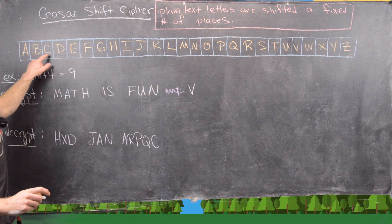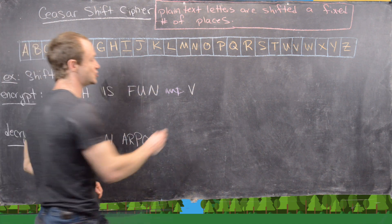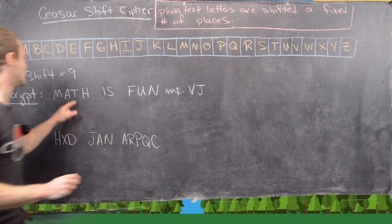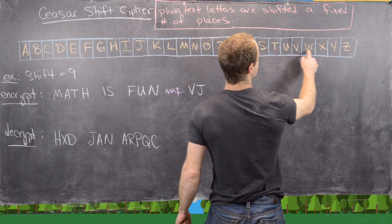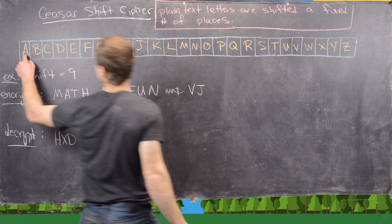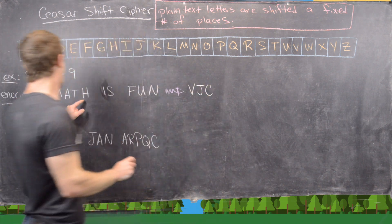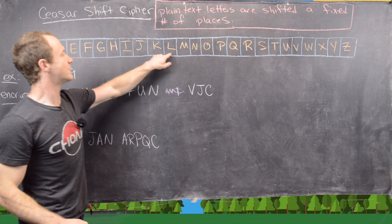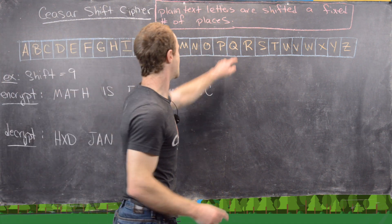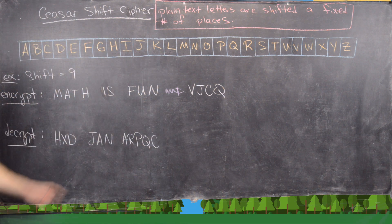Then A goes 9 places to J. T goes 9 places to C. So there we've got our first word — math — which encrypts to V, J, C, Q.